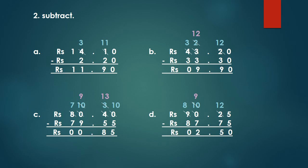Let's solve some more examples. Second part, question A. Rupees 14.10 minus rupees 2.20. 0 minus 0 equals 0. 0 minus 0 equals 0. Children, we cannot subtract 2 from 1, so we borrow. 4 becomes 3 and 1 becomes 11. 11 minus 2 equals 9. We write the point as it is. Then 3 minus 2 equals 1 and 1 comes down as it is. And children, we will not forget to write the rupees sign also. So our answer is rupees 11.90.